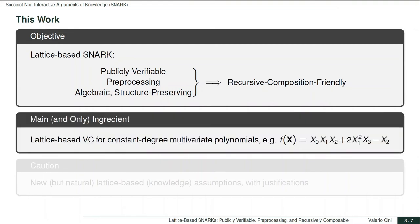We show that the main and only ingredient to obtain such a primitive is a lattice-based vector commitment, which supports opening to constant degree multivariate polynomial, and which is extractable and compact. I do not have the time here to define all these properties, but you can watch the longer presentation if you are interested. In our work, we show that it is possible to compile such a VC scheme into a SNARK that satisfies the required properties.